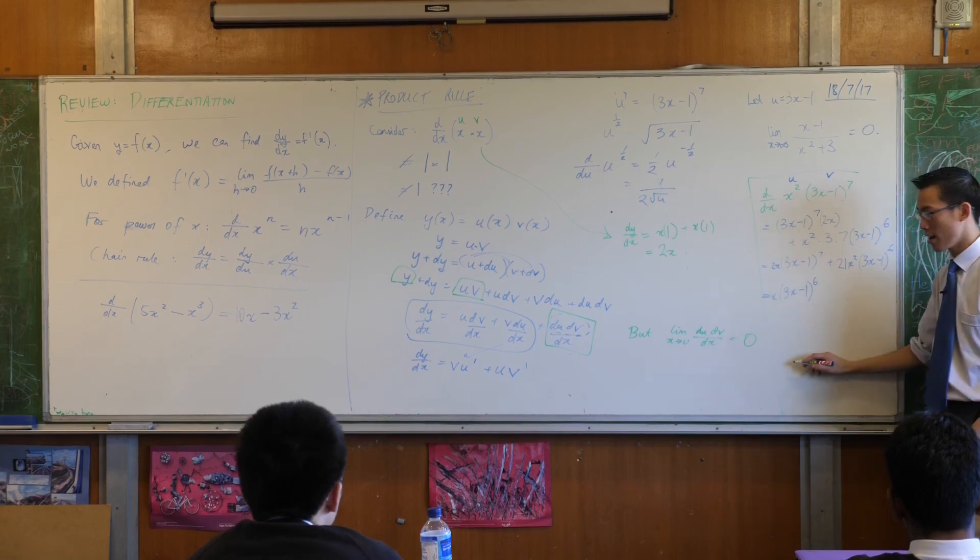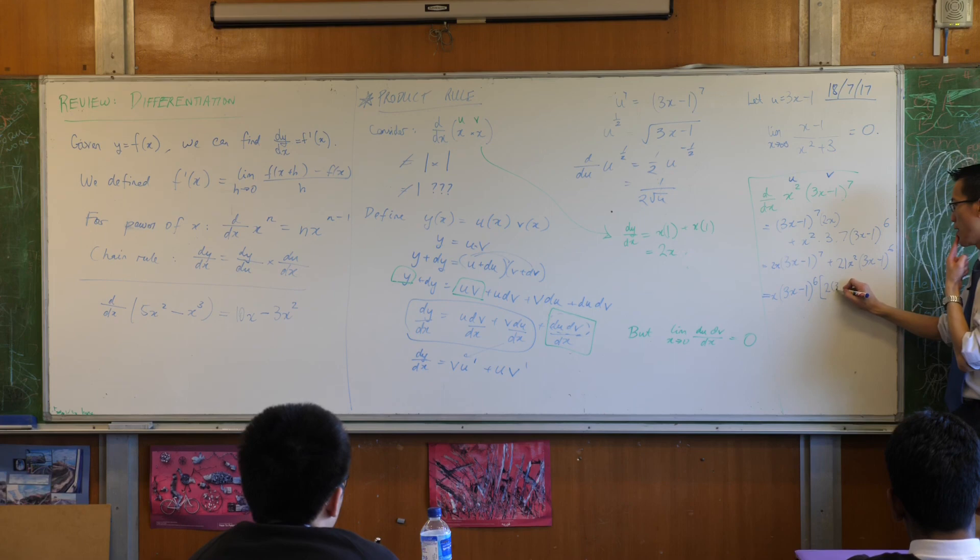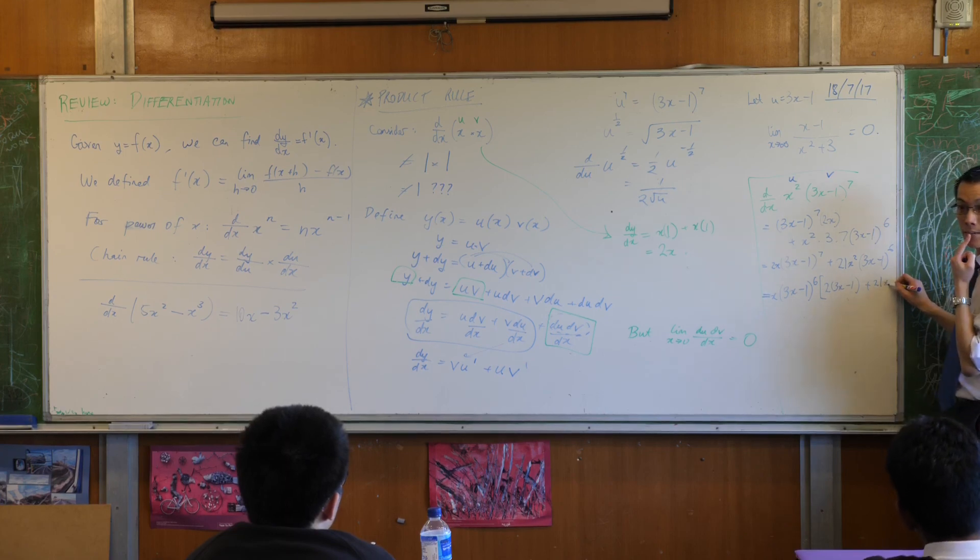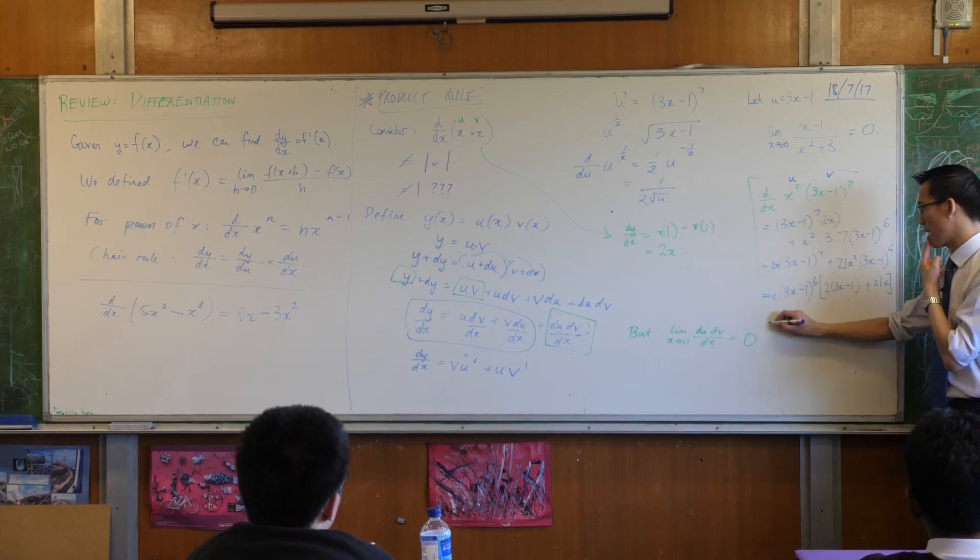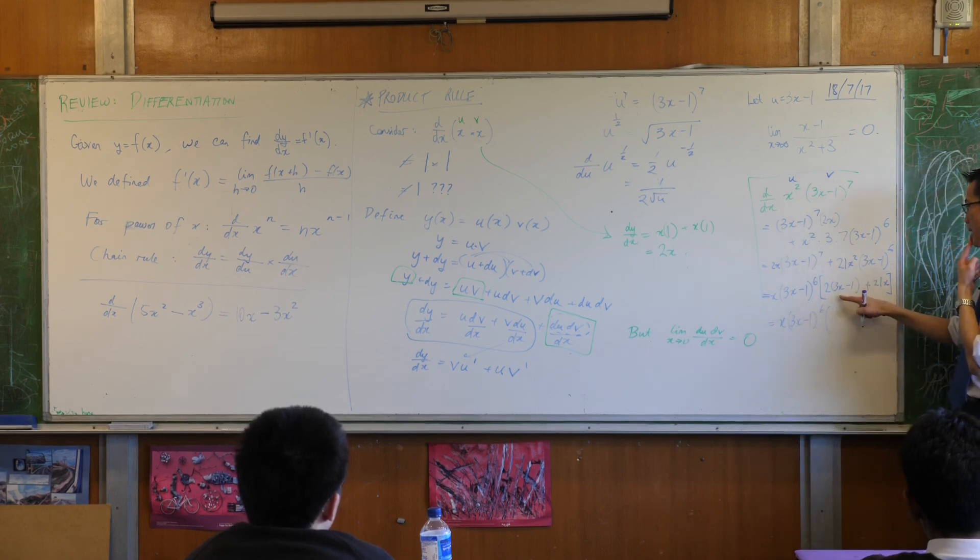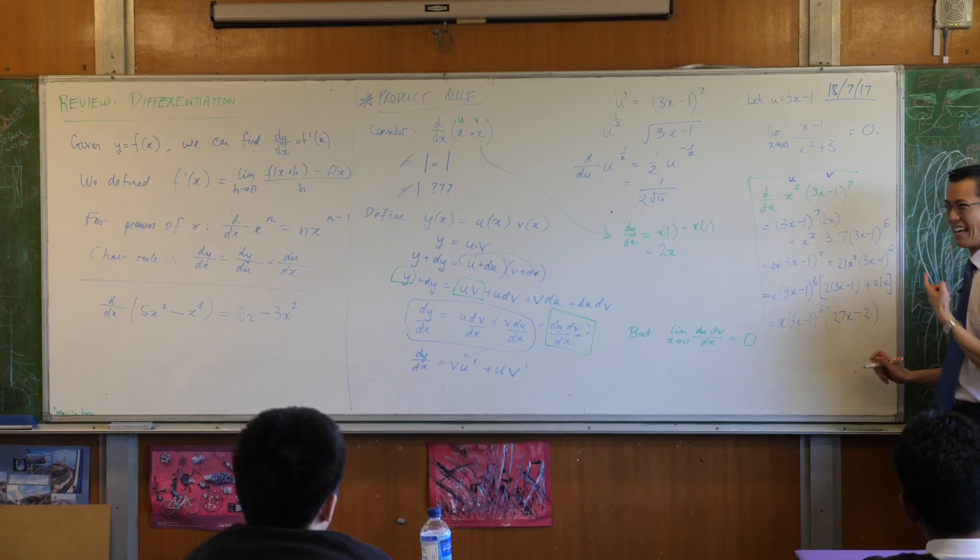So I'll chuck the x out there, which would leave me with, okay, let's see, two lots of this and 21x. Do you agree? Which, again, I can simplify a little further. 6x minus 2 plus 21x. So that makes it 27x minus 2. Yeah?